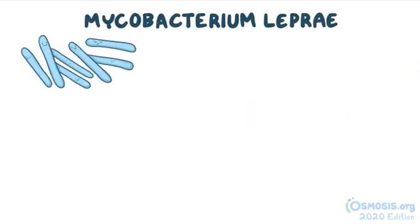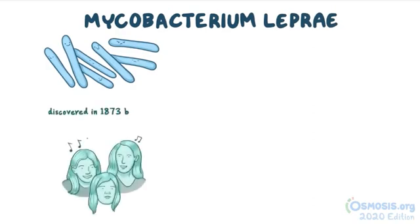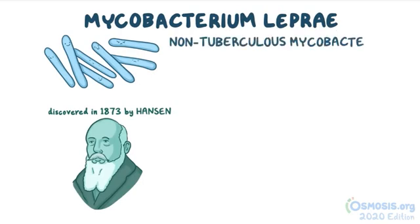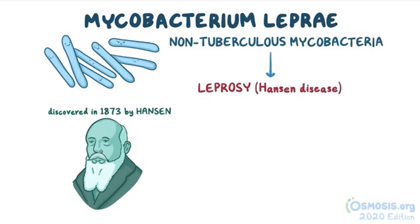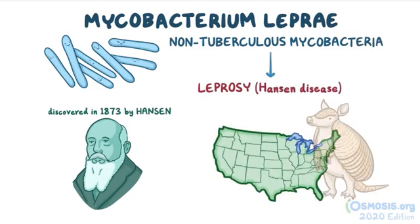Mycobacterium leprae is a rod-shaped bacteria which was first discovered in 1873 by Hansen. It is a non-tuberculosis mycobacteria, and it causes a disease called leprosy, or Hansen disease. In the US, the animal reservoir for Mycobacterium leprae are armadillos.